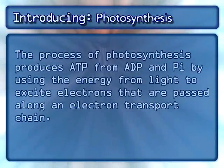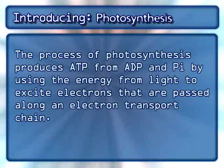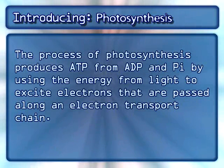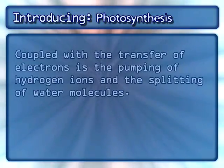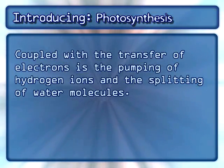The process of photosynthesis produces ATP from ADP and PI by using the energy from light to excite electrons that are passed along an electron transport chain. Coupled with the transfer of electrons is the pumping of hydrogen ions and the splitting of water molecules.